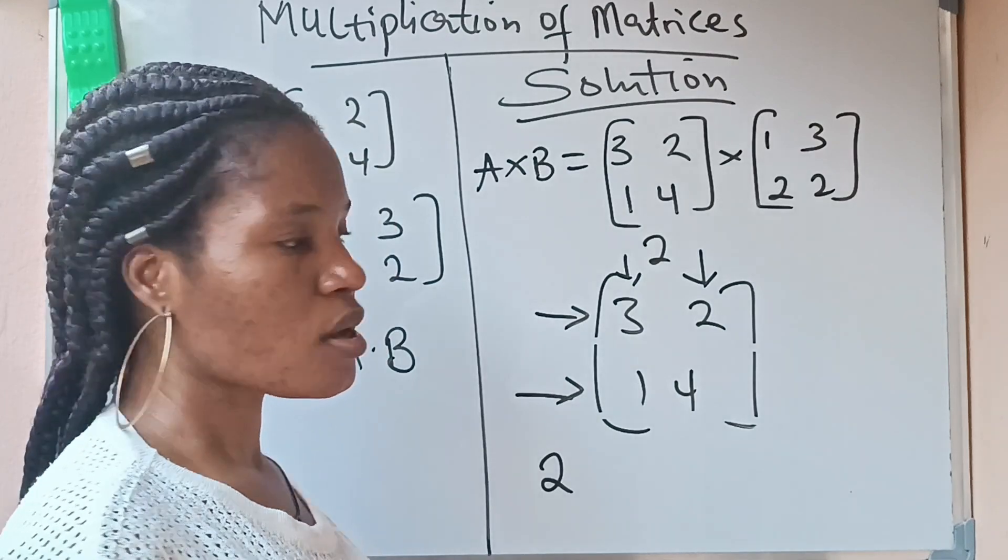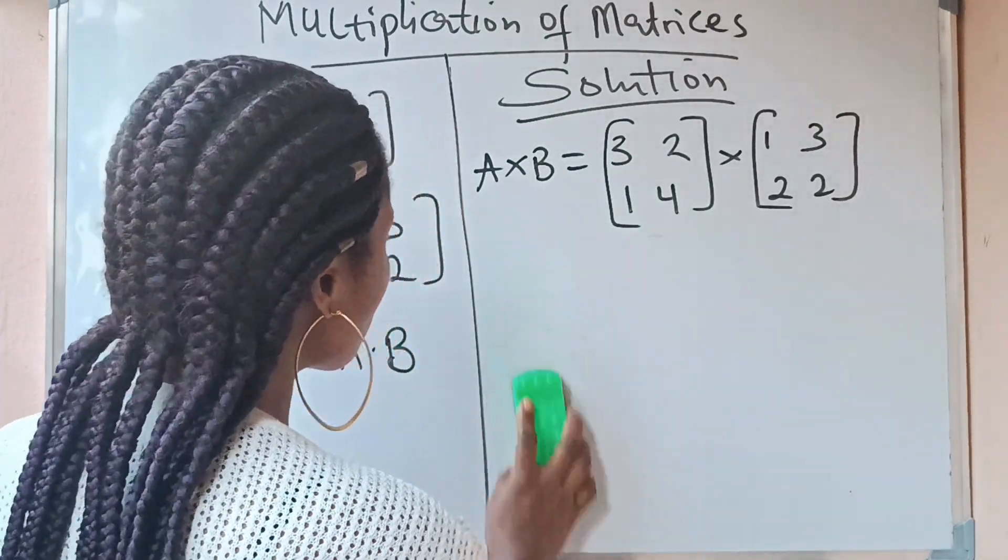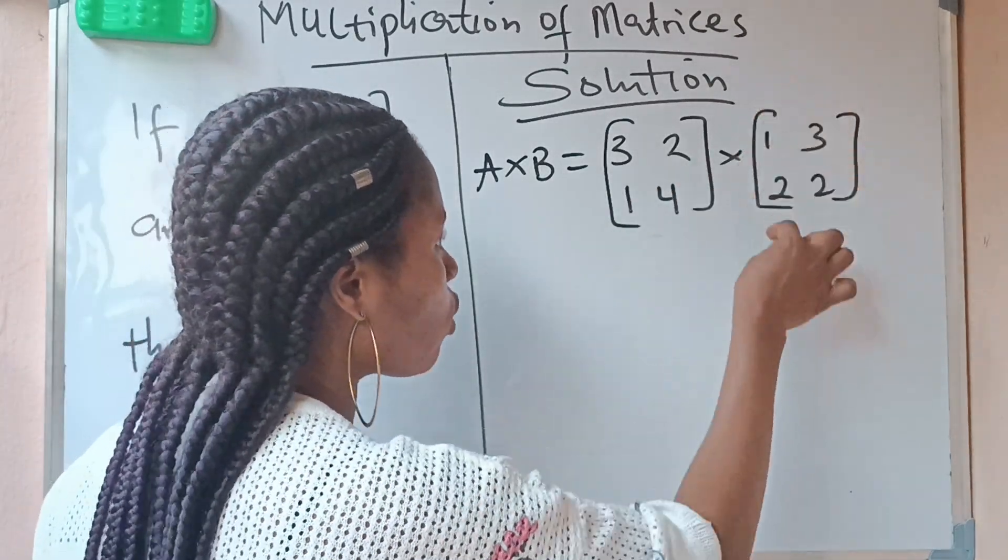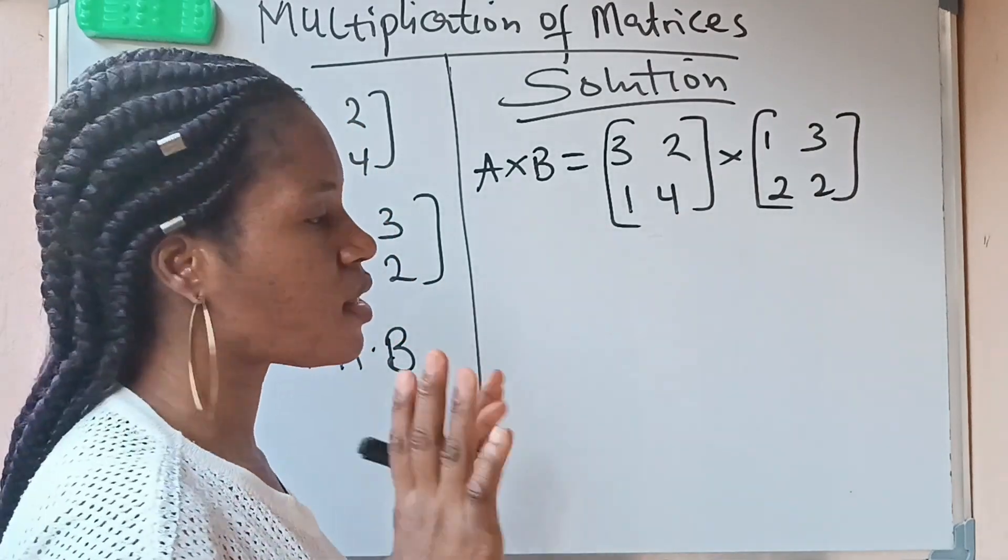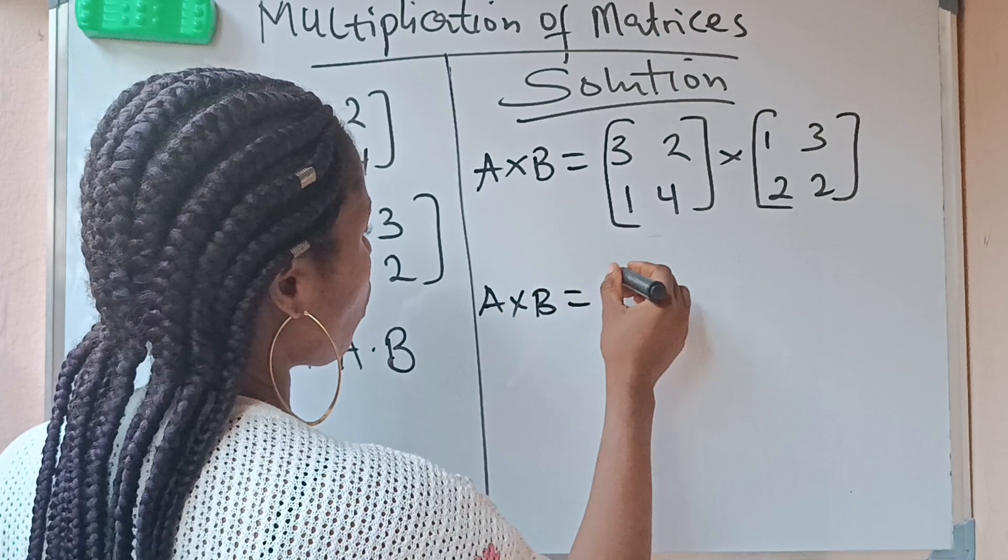Row by column, row by column. See how I'm going to do it. So A times B now is equal to: you open a bracket...